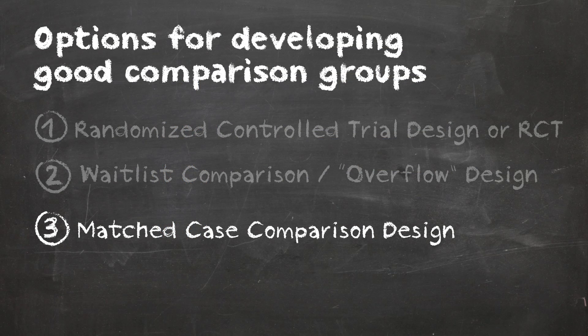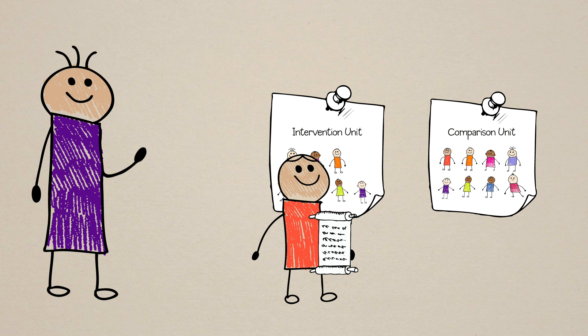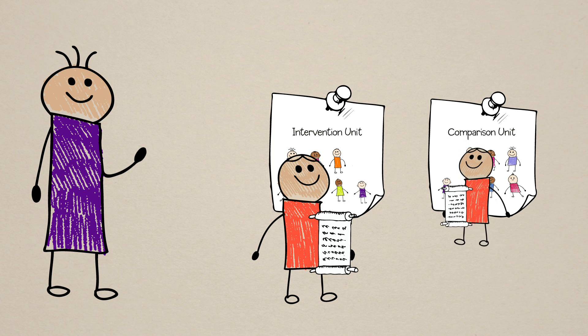Another alternative to RCTs is referred to as a matched case comparison design. With this approach, each unit assigned to receive an intervention we are testing is matched on a case-by-case basis with a comparison unit that looks as much like that intervention unit as possible.